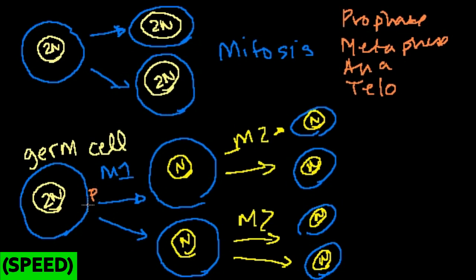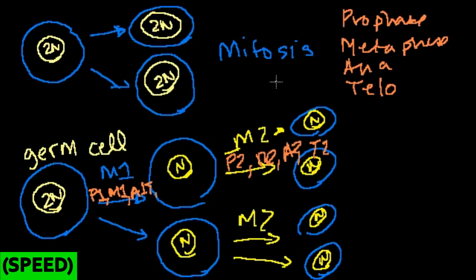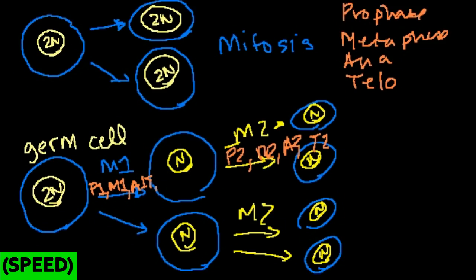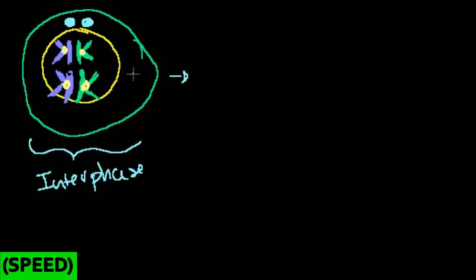So you have prophase 1, followed by metaphase 1, anaphase 1, and telophase 1. Then after meiosis I, it all happens again: prophase 2, metaphase 2, anaphase 2, and telophase 2. If you really want to memorize the names — which you unfortunately have to do for tests — just remember prophase, metaphase, anaphase, telophase; in meiosis it's happening twice, and what's happening is a little bit different.